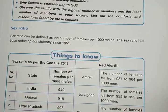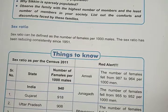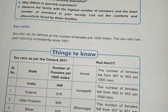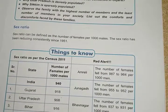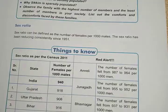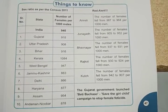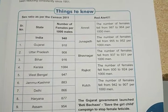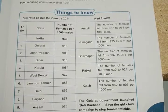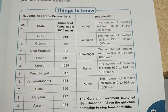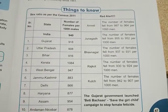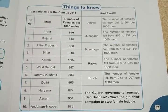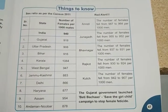The next topic is sex ratio. Sex ratio can be defined as the number of females per thousand males. Sex ratio has been reduced consistently since 1951. Overall, India's number of females per thousand males is 940, which has declined from 955. States like Gujarat, Uttar Pradesh, Bihar, Kerala, West Bengal, Jammu and Kashmir, and Delhi have their sex ratio data from the Census 2011.